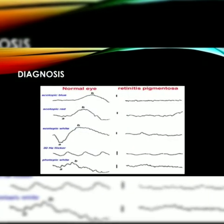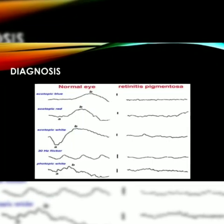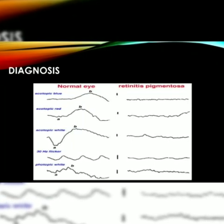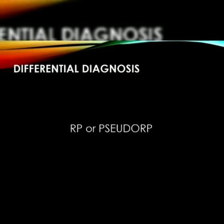Over 100 types of retinitis pigmentosa are present. For diagnosis, it is based on fundus findings as explained before. ERG and EOG are subnormal. Perimetry shows classical ring scotoma, and dark adaptation time is increased. The picture shown here illustrates the difference between the ERG of a normal eye and the eye with RP.